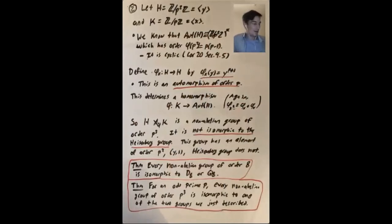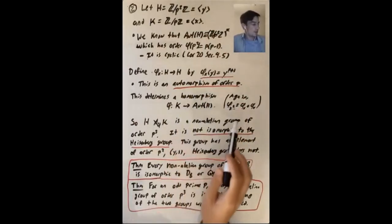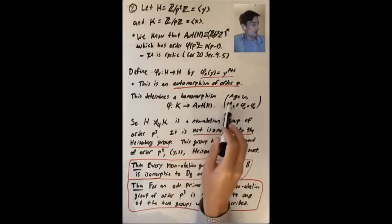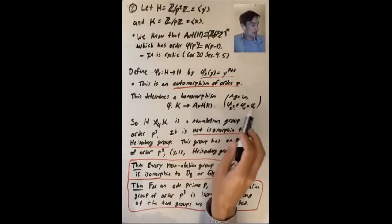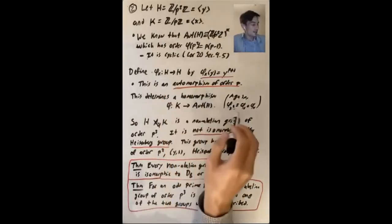And again, how is that true? Well, what should phi of x squared be? If this is a homomorphism, we definitely want phi of x squared to be phi of x following phi of x. So if we know what phi x is, that tells us what phi x squared should be.